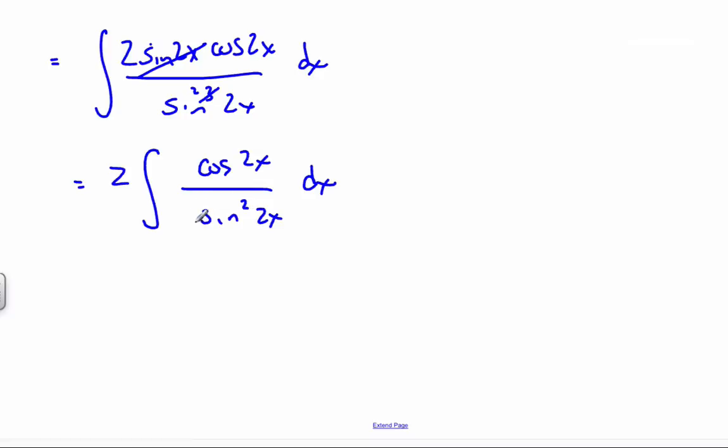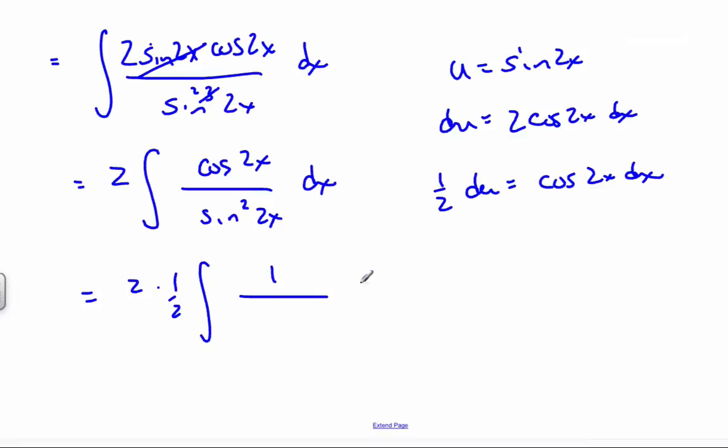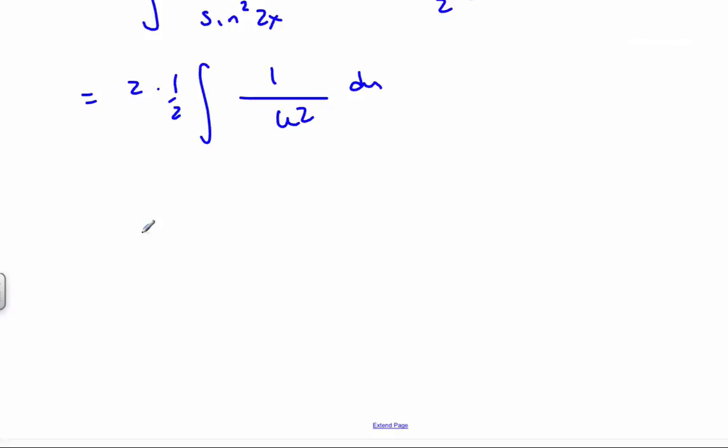And when I see this, I can see that I have a classic u substitution here. Here is my u. I'll let u be sin 2x. So du will be cos 2x dx times the 2, which is half du equals cos 2x dx, which I can replace here. I'll pull the half outside, so it's 2 times 1 du over u². Those cancel. u to the minus 2 du,